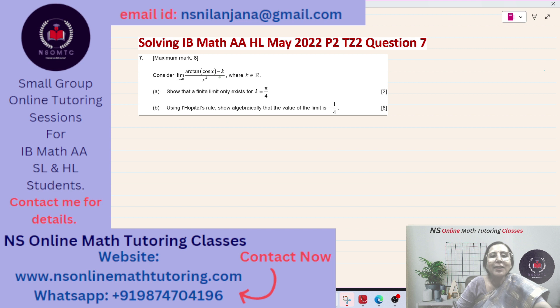Consider limit x tends to 0 arctan of cos x minus k over x square where k belongs to the set of real numbers. Subpart A says show that a finite limit only exists for k equal to π over 4, contains 2 marks.